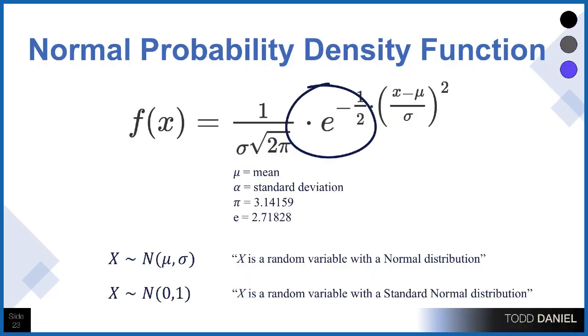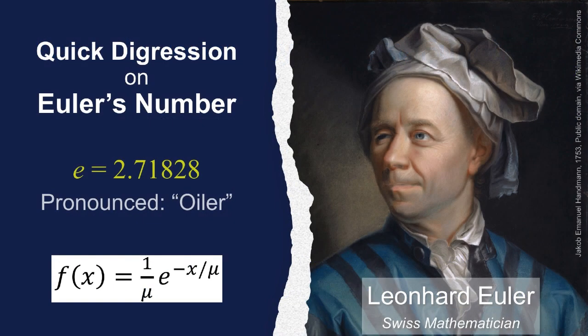There's one other important part of this formula I want to point out, and that is the letter e. This is Euler's number — he was a Swiss mathematician, so his name is pronounced 'Euler.' When you see e, that's Euler's number, and it is always 2.71828, in the same way that pi stands in for 3.1415. One way to know your stuff in statistics is to pronounce Euler's number correctly — now you will always appear smart to your statistical friends.